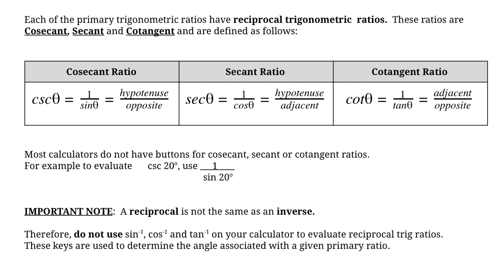Evaluating for your reciprocal trig ratios is not the same as using the inverse buttons on your calculator — the inverse of sine, cosine, or tan. Those inverse buttons are for when you're evaluating for an unknown angle. To evaluate the reciprocal trig ratios, you need to use 1 over sine, 1 divided by cosine, or 1 divided by tangent.